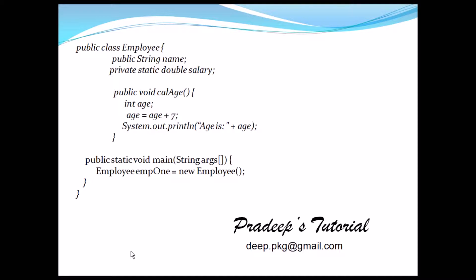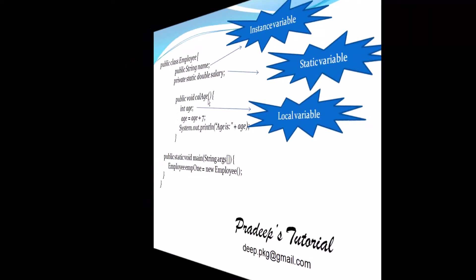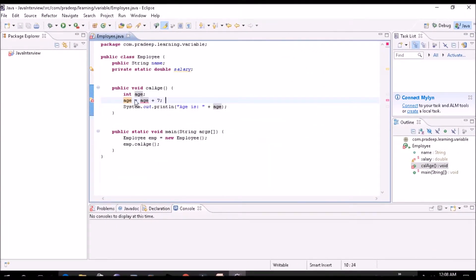Let's try to understand with this code. You should now be able to identify which is the local variable, which is the static variable, and which is the instance variable. Here, 'int age' is inside a method, so it's a local variable. We have a 'static' keyword, so that's a static variable, and the other one is an instance variable. I'm sure some people have already figured out there may be errors — we'll discuss that. Let's flip to Eclipse.